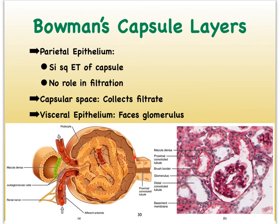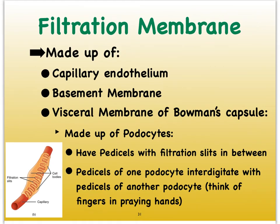Notice that there's a very abrupt switch from simple squamous epithelial tissue to simple cuboidal tissue when we get to the proximal convoluted tubules, and you can also see the microvilli here in this epithelial tissue. As for the inner visceral epithelium of the Bowman's capsule — it's a very modified epithelium. Looking at the inset, you can see one of the capillaries that forms the glomerulus, wrapped by these very specialized cells that form the visceral layer of the Bowman's capsule.